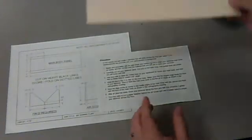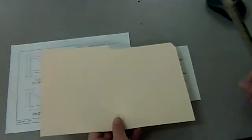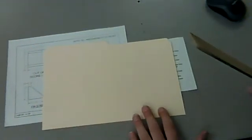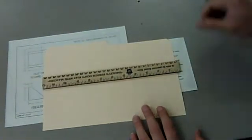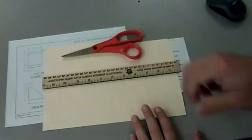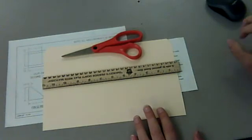And we have our file folder which we will use to create the actual air skimmer, a ruler for measurement, a pair of scissors, glue stick, and some tape.